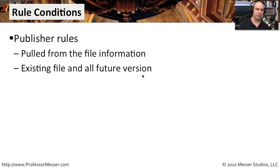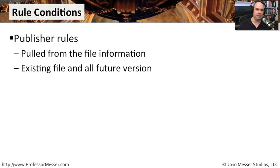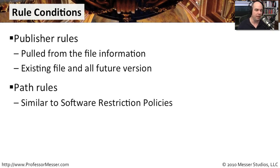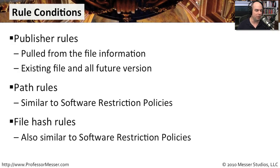When you start working with the different rules, you'll see there are different options available for each one. Publisher rules pull information right from the file so we can understand what publisher was associated with that executable. Interestingly, this rule can affect not just the current file but all future versions of a particular file, so you don't have to keep going back in to administer rules when new versions come out. We've also got path rules, which are almost identical to how we set up rules in software restriction policies. And we have file hash rules, which are also very similar, with additional configuration options available only in AppLocker.